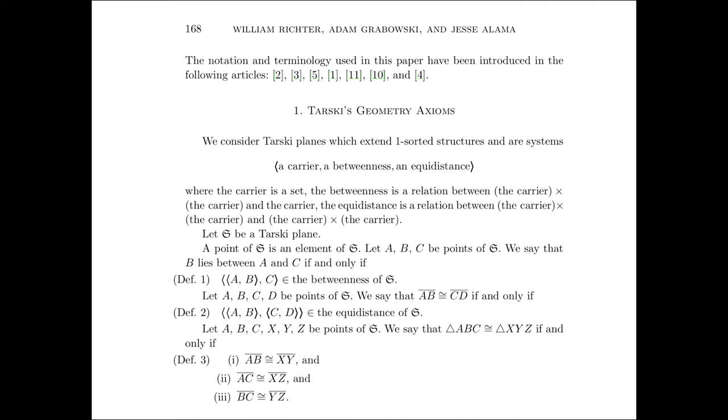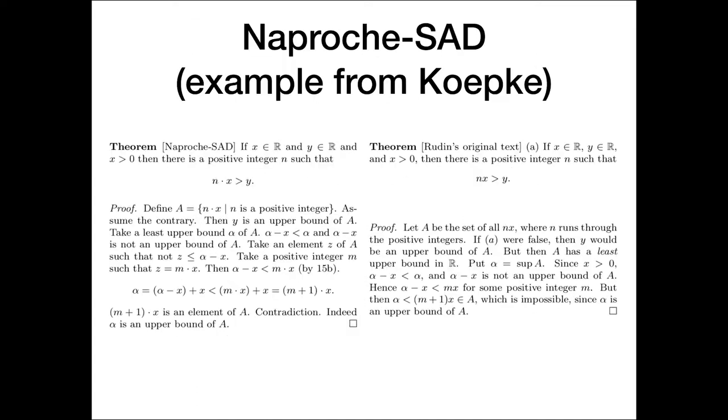So for instance, we consider Tarski planes, which extend one-sorted structures and or systems, a carrier, a betweenness, an equidistance, where the carriers are set. The betweenness is a relation between such and such and the carrier. And so you see this is maybe not completely natural English, but it's something that can be read directly by the computer and also by humans.